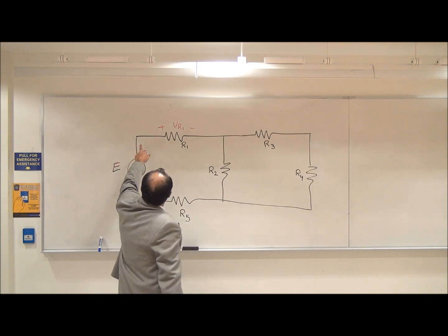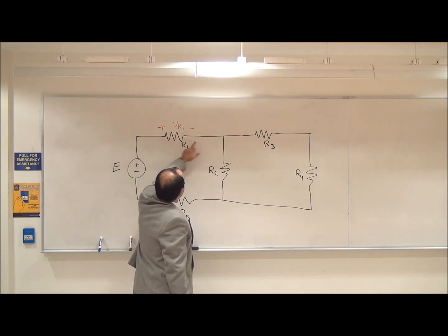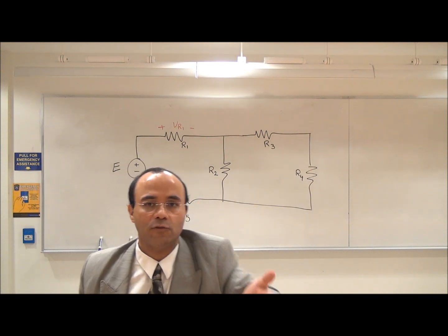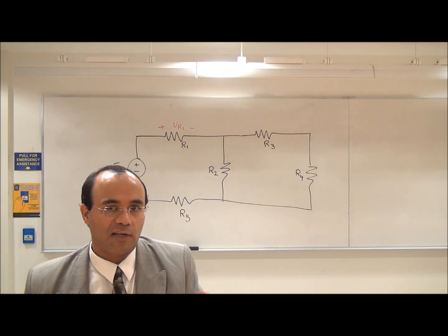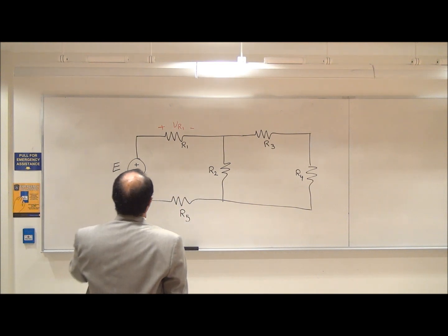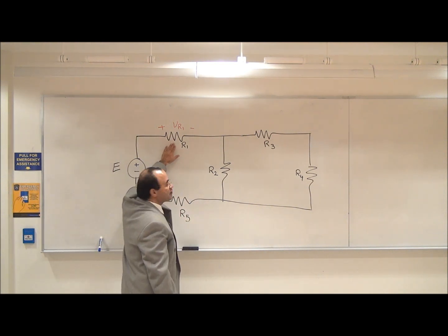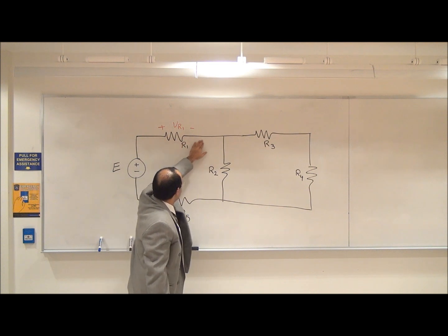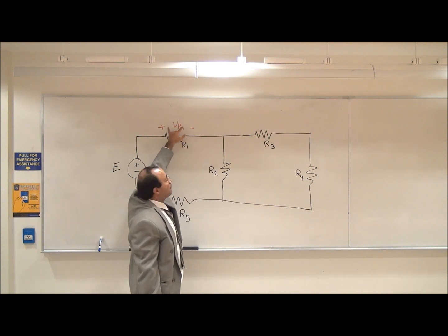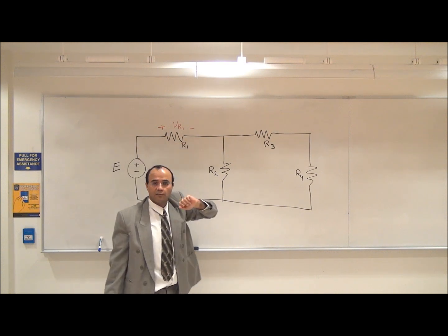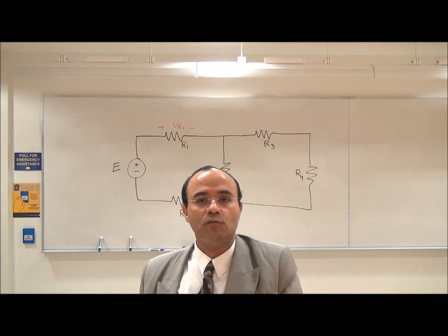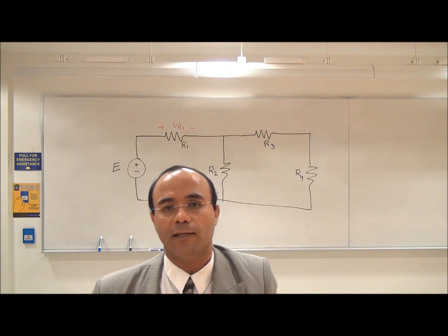Every component has two nodes — in this case, two nodes. We have components later on where we are going to have more than two nodes, such as transistors, but that's not the topic of this class. The topic of this class is about fixed resistors, which have two nodes. I want to represent component voltage versus the voltage of the nodes, but in order to do that, I need to define what the voltage of a node is.